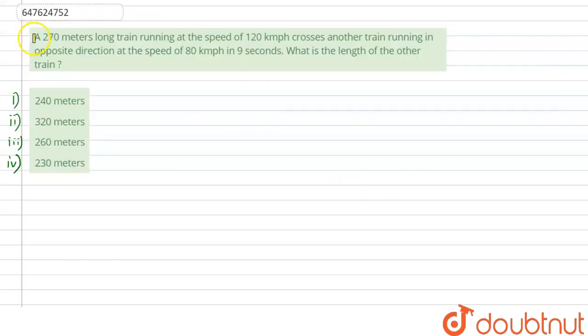Hello everyone, let's solve this question. A 270 meters long train running at the speed of 120 km per hour crosses another train running in opposite direction at the speed of 80 km per hour in 9 seconds. What is the length of the other train?